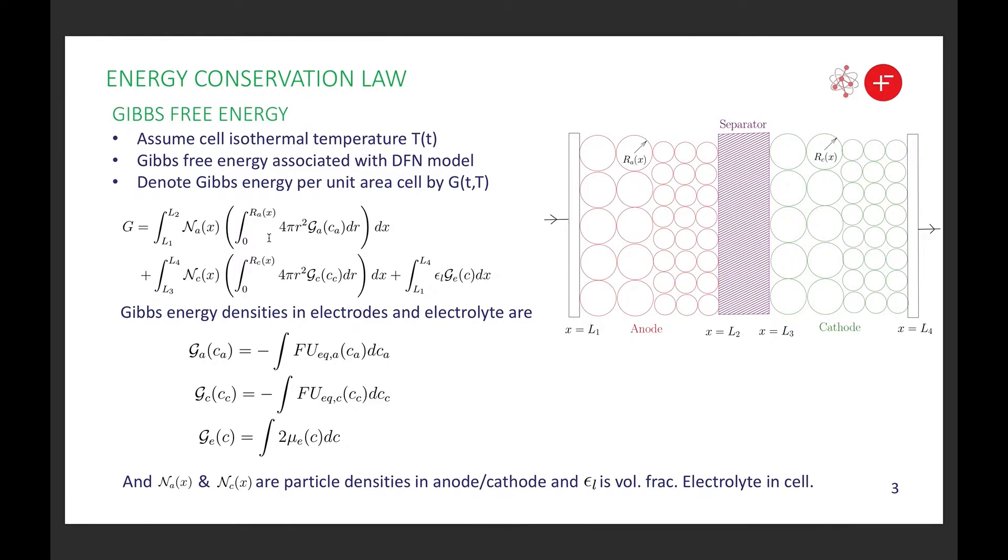The energy conservation law is going to be couched in terms of the Gibbs free energy of the device. It turns out that there's a natural Gibbs free energy that you can associate with the Doyle-Fuller-Newman model, and this formula here is what that Gibbs free energy looks like. Essentially there are three parts to it: there's a Gibbs free energy associated with the chemical energy in the anode particles, that's this first term. The second term is the same thing but in the cathode particles, and the final term is the chemical energy associated with the electrolyte.